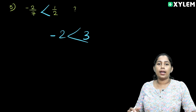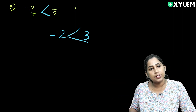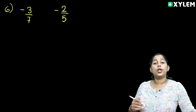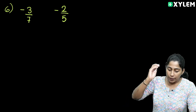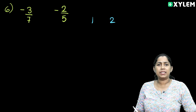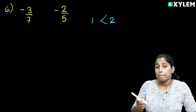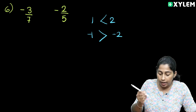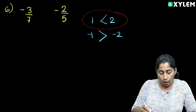What is a negative value? What is a positive value? We will say positive values and negative values. 1 and 2: 2 is bigger than 1. But for minus 1 and minus 2, the inequality sign is reversed — minus 1 is greater than minus 2.